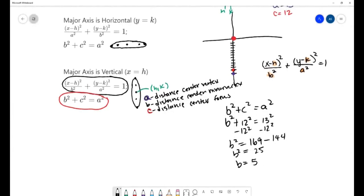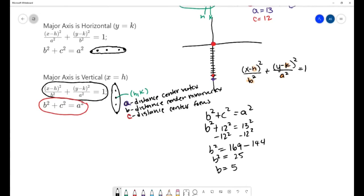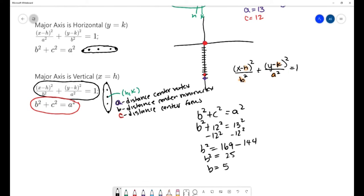So I can write the equation and I can also draw the graph now because I have all the details. Filling in the center of (0, 0), filling in a b of 5 and an a of 13 would give me (x - 0)² over 5² plus (y - 0)² over 13² equals 1. That's x² over 25 plus y² over 169 equals 1.